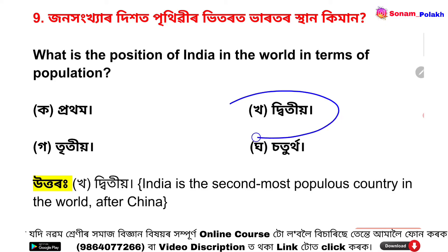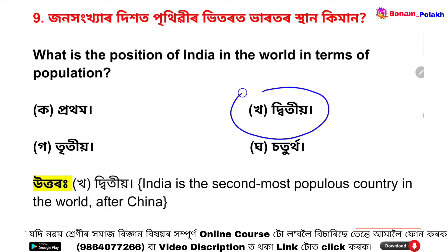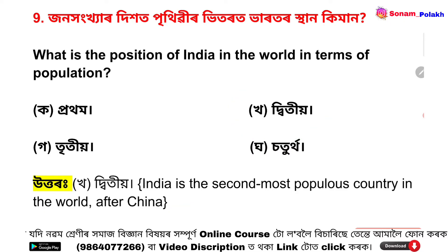The whole society has a population of the land. What is the general population of the whole community from Europe? India is the second largest population in the world after China.